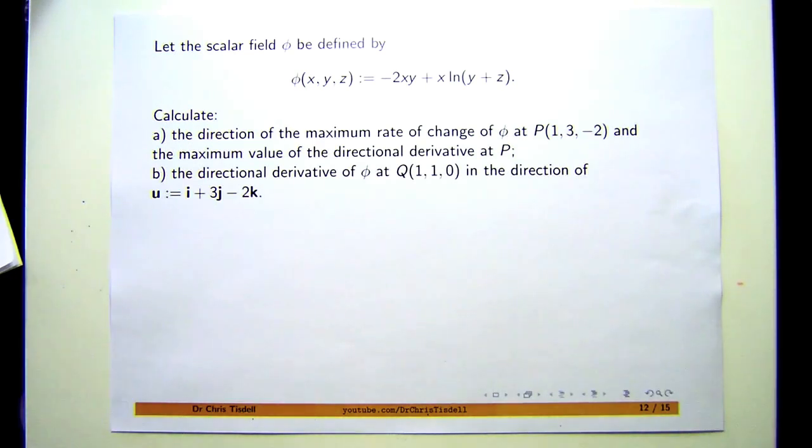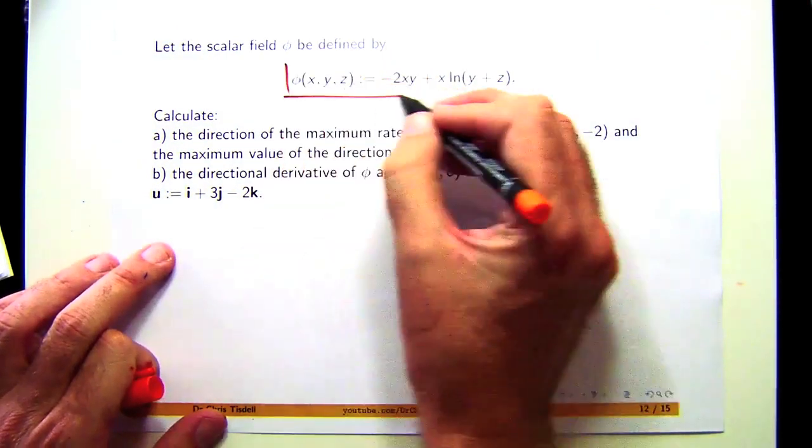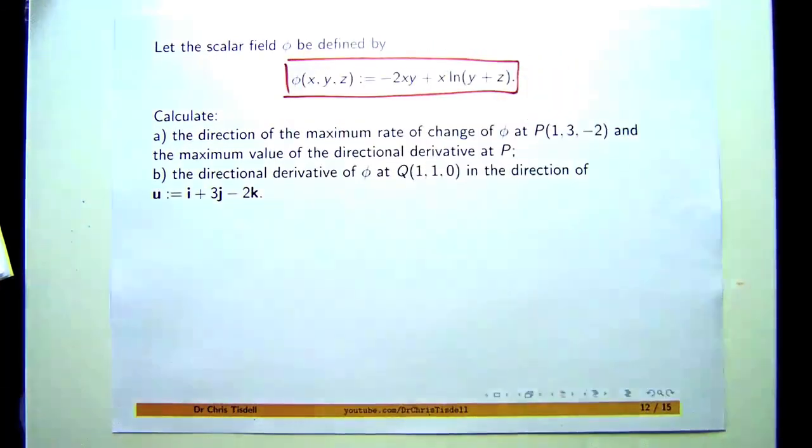Alright, here's another question from Vector Calculus, and I'm going to do the first part, part A. Now, part A is actually harder than part B. Part A asks you to do the following. Suppose you've got a function of three variables, φ, which we're going to call a scalar field, defined by this function here.